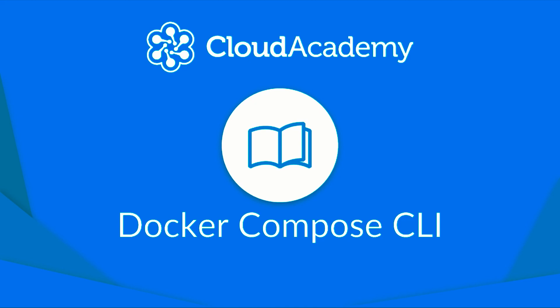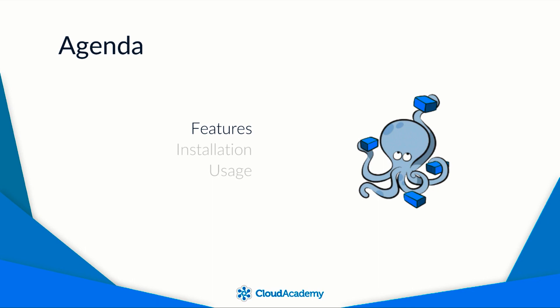In this lesson, we'll see how to use the Docker Compose command-line interface to turn multi-container applications described in Compose files into actual running environments in Docker. I'll start by reviewing some of the high-level features of the Compose CLI. Next, I will go through some of the installation options available for different platforms. Lastly, I'll finish the lesson by looking at how to use the Docker Compose CLI by reviewing common commands and parameters.